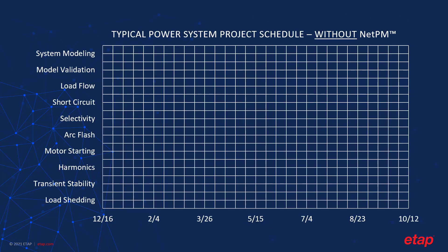Traditionally, without NetPM, various teams need to sequentially pass files along at each stage of the project. In some cases, projects can loop back several times for additional adjustments based on recent changes, easily leading to deadline delays. This manual process wastes time as it keeps our teams in a constant state of hurry up and wait.